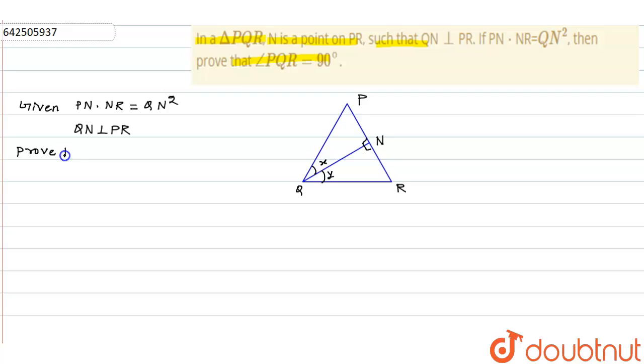angle PQR is equal to 90 degrees. So let's take this: we get PN upon QN is equal to QN upon NR.